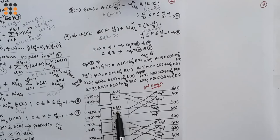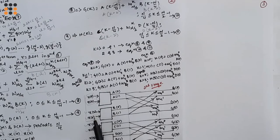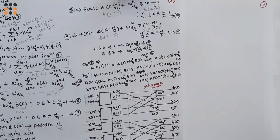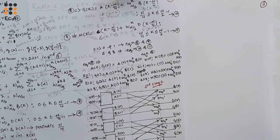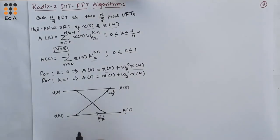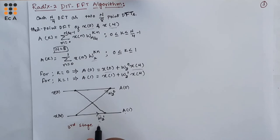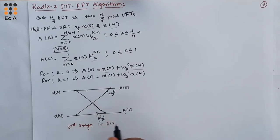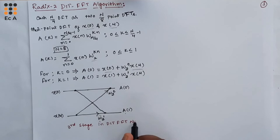To implement the next equation, we join the line and take the scaling factor as W_2^1. So a(1) equals x(0) plus W_2^1 times x(4). Similarly, you can write it for x(2), x(6), x(1), x(5), x(3), and x(7). This is the third stage in DIT FFT for N equal to 8.